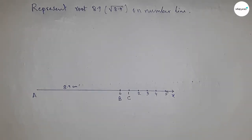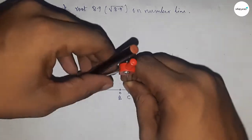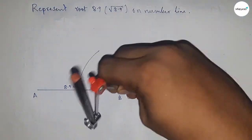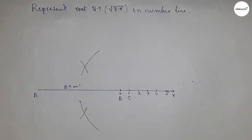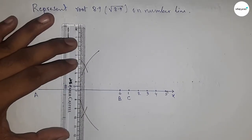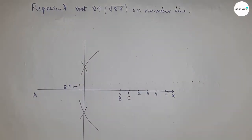Now we have to bisect the line AC. So taking greater than half of AC and drawing arcs by this way with the same length. Putting the compass here and cut the arcs. Next, joining this which meets at a point O.